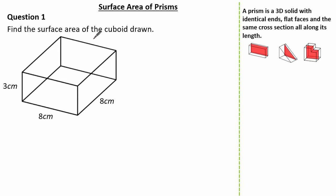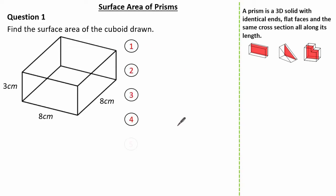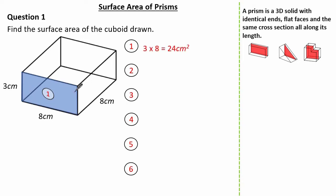The question wants us to find the surface area of the cuboid drawn. We have a length of 3 cm, 8 cm, and 8 cm. Because it's a cuboid we know there are six faces, so let's identify our six calculations. You can number the faces in any order you like. Looking at face 1, it's a 3 by 8, so the area of this face is 24 cm².